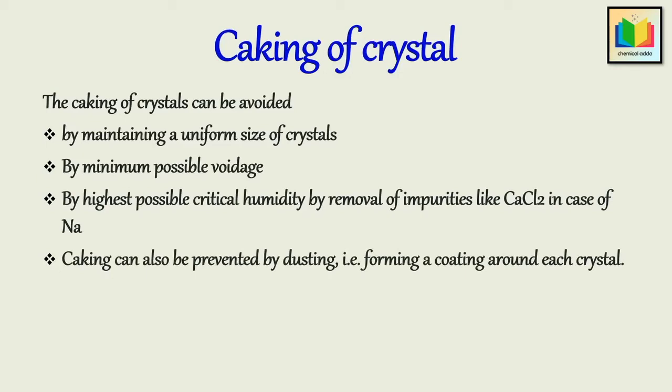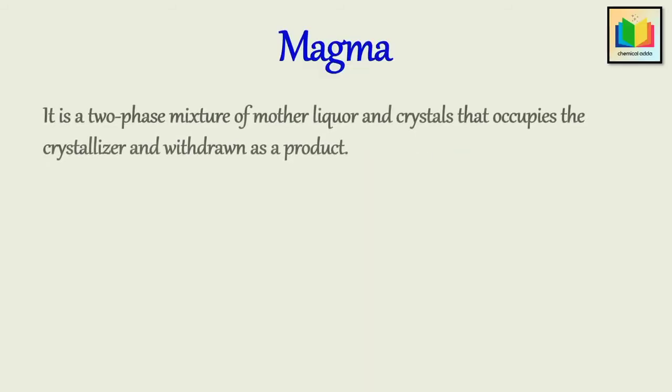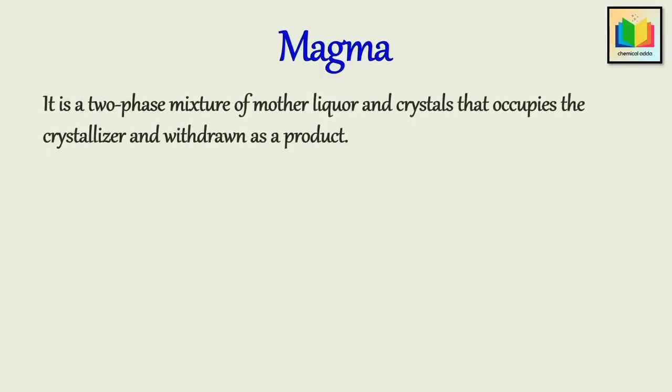Next question: What is magma? It is a two-phase mixture of mother liquor and crystals that occupies the crystallizer and is withdrawn as a product.